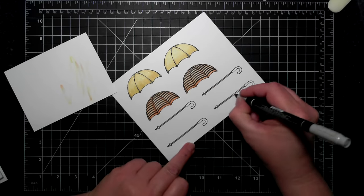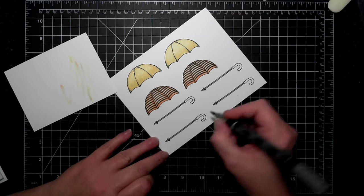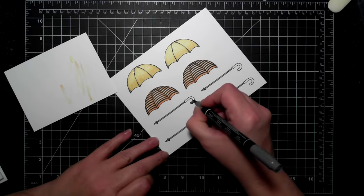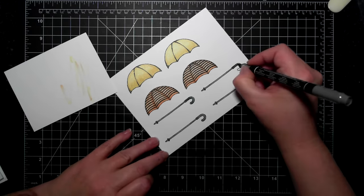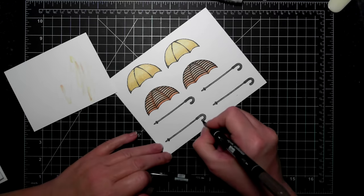I have a lot of the Strathmore Smooth Bristol cardstock so why not use it - it's for pen and ink and it's a lovely paper if you've not tried it yet. I find it in my art store.